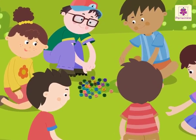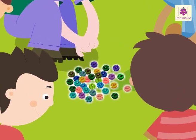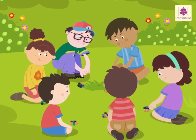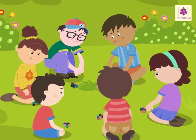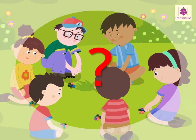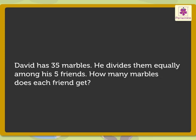Look, David has 35 marbles. He divides them equally among his five friends. How many marbles does each friend get? First we read this story. What information does it give? David has 35 marbles he divides them equally among his five friends. Now let us see what we have to find out. How many marbles does each friend get?